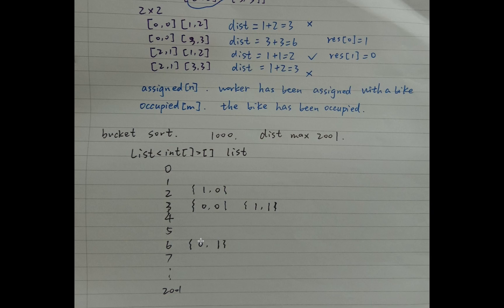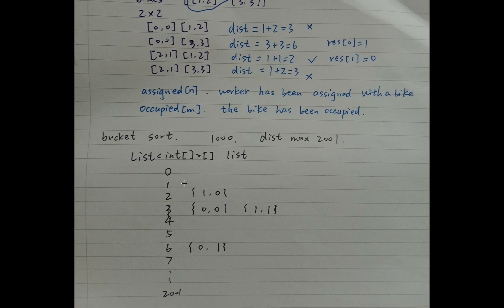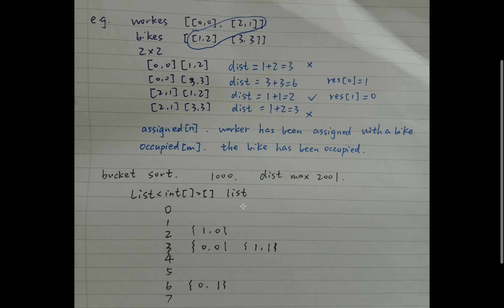In the end, we just iterate from 0 to 2000. We check if the current list is null and skip it. If the current list is not null, we process that distance. Why is this solution correct? Because when we iterate the distance, it is sorted from small to large. And because we append the worker and bike pairs in ascending order, it is guaranteed that we get the smaller worker index and the smaller bike index.